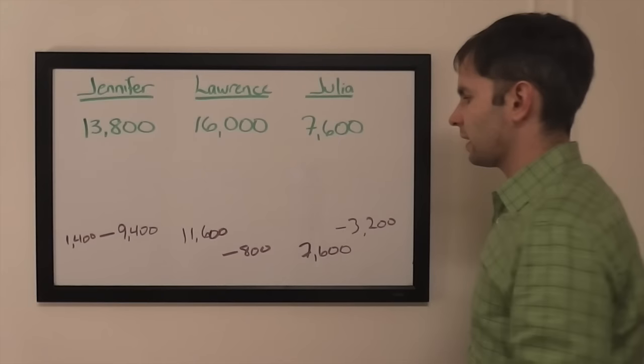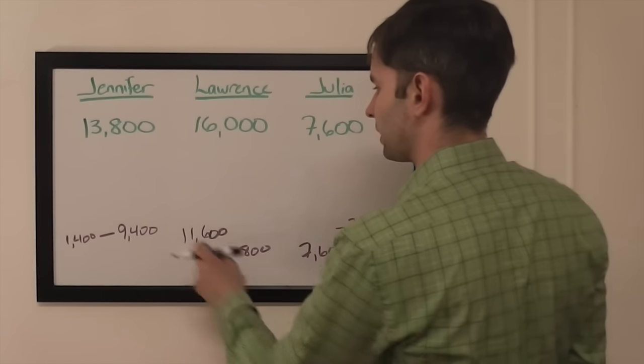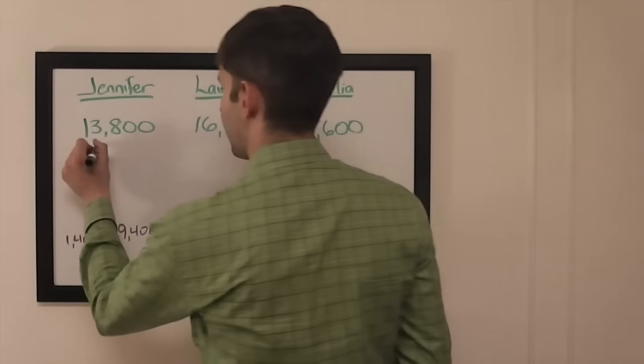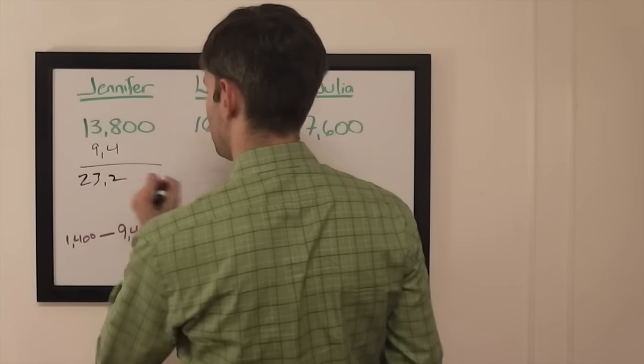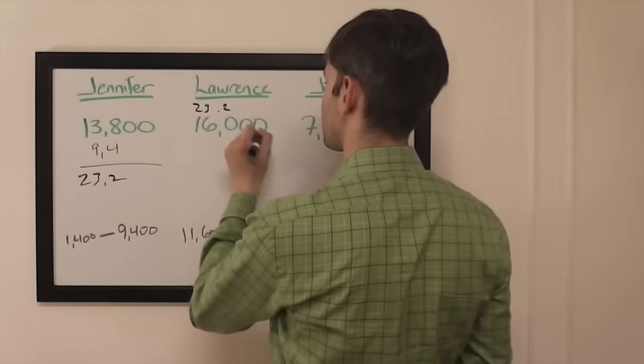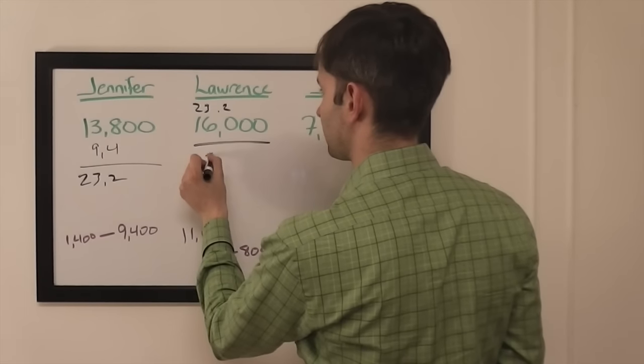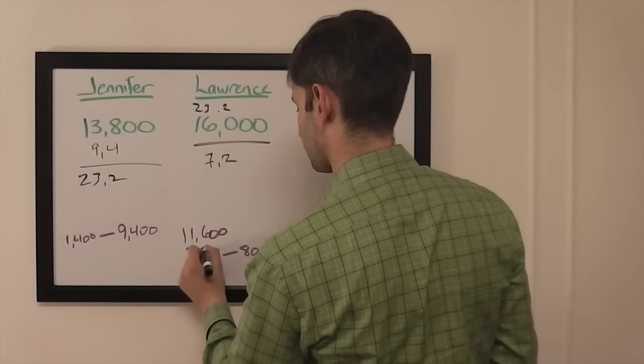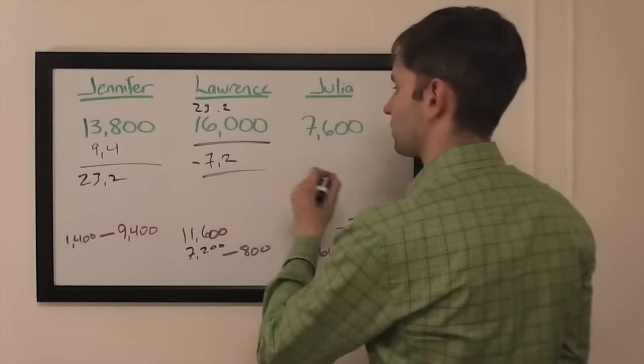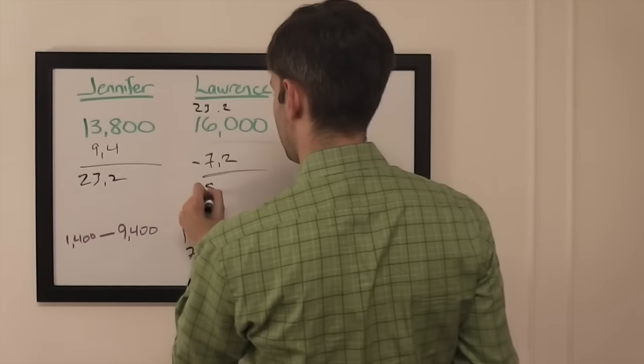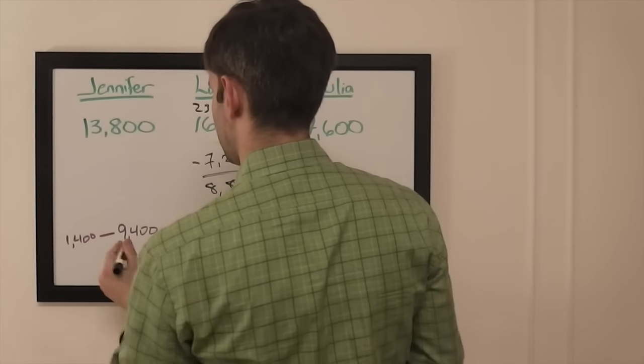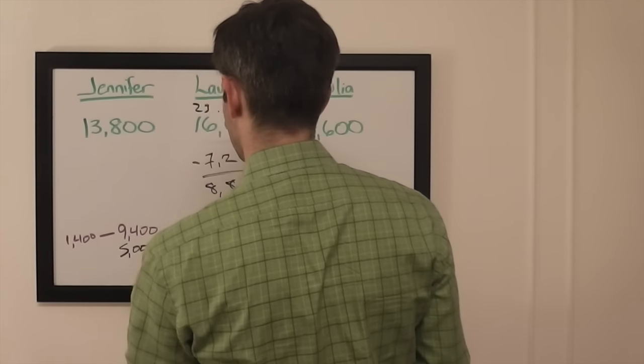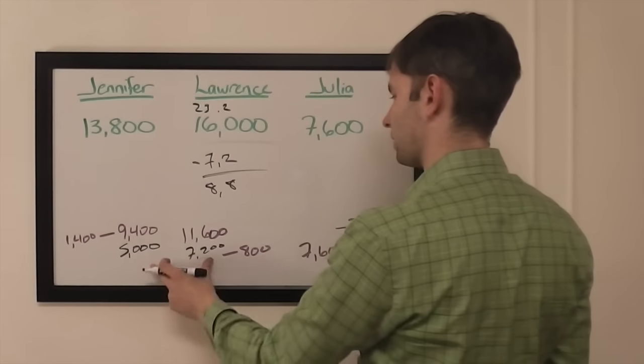Alright, second scenario. If, let's start with his 9,400 amount. If Jennifer goes for that she will have 23,200, so Lawrence would have to wager 7,200. And if he's wrong he'll be left with 8,800, so to stay above that that's going to be 5,000 out of Jennifer.